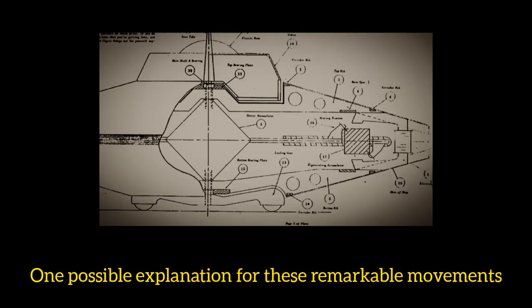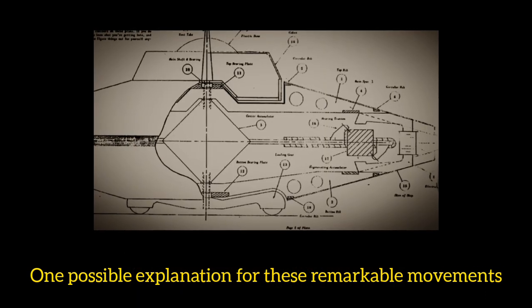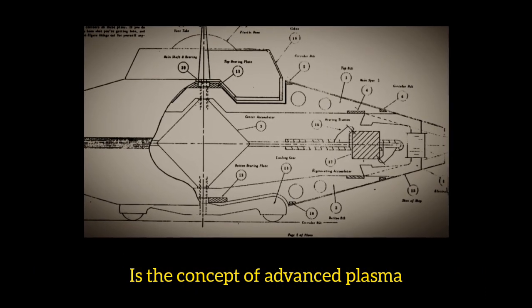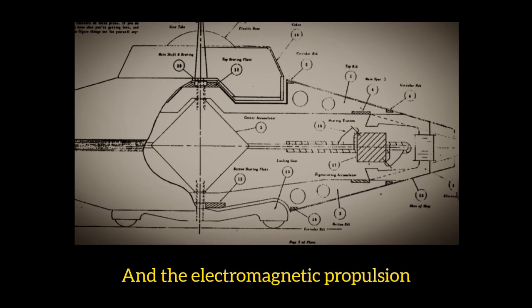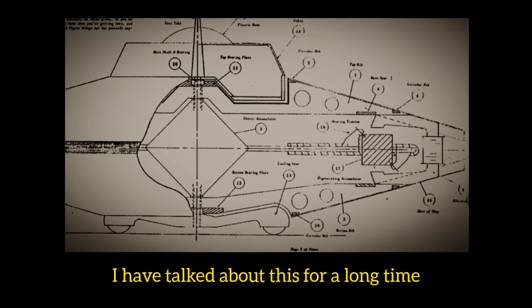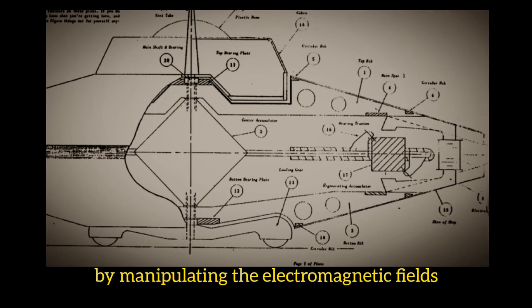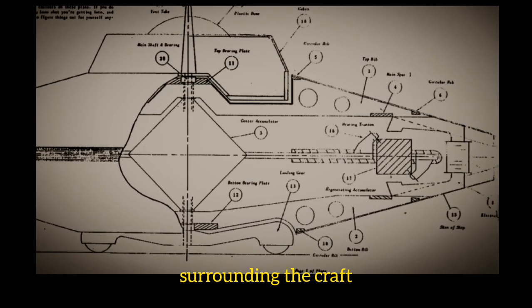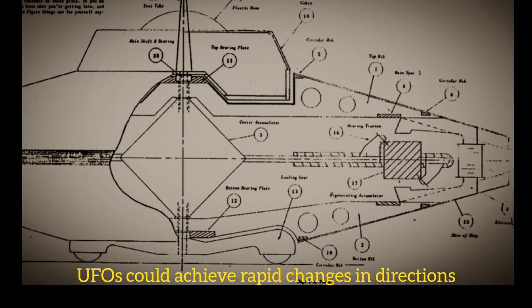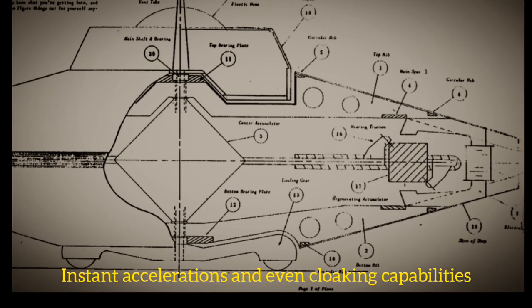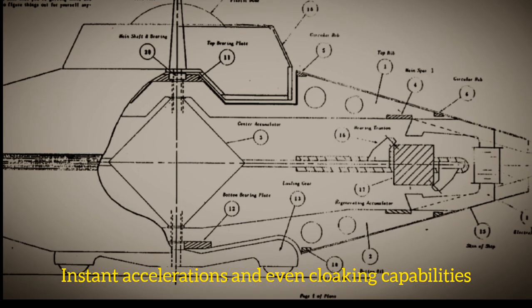One possible explanation for these remarkable movements is the concept of advanced plasma and electromagnetic propulsion, and I have talked about this for a long time. By manipulating the electromagnetic fields surrounding the craft, UFOs could achieve rapid changes in direction, instant acceleration, and even cloaking capabilities.